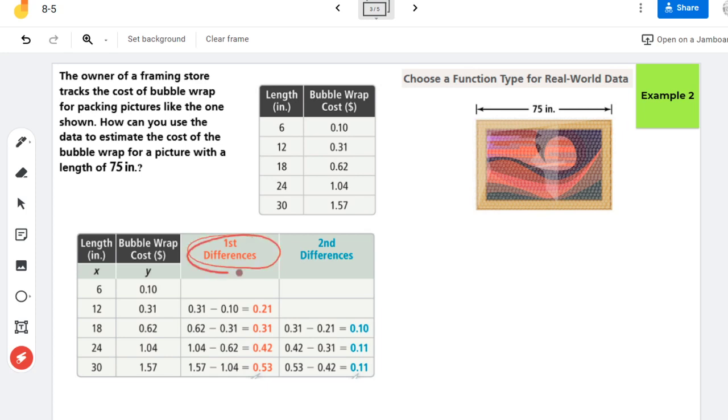So Savvas has already done that for us. Our first differences, which is when I subtract my y values, came out like this, and these are not very constant. You could see they're going up by about 10 each time. So then we went ahead and found our second differences, and they're reasonably close.